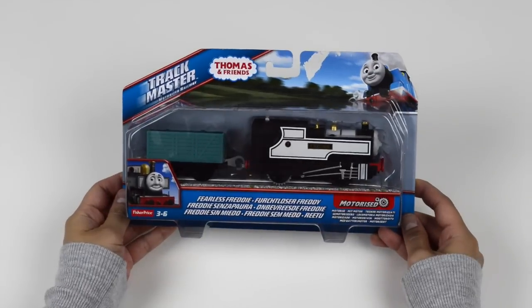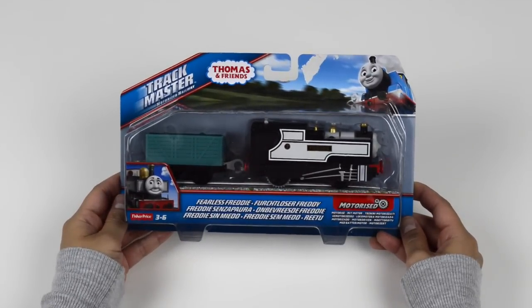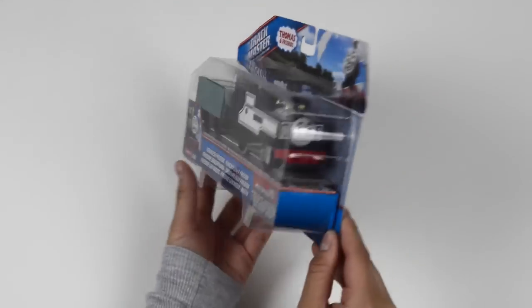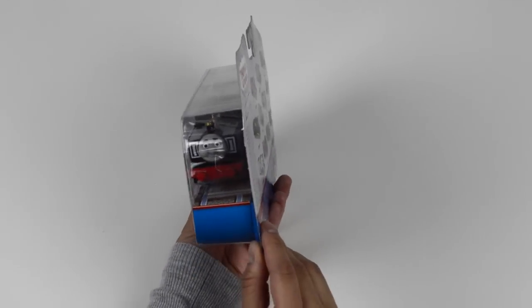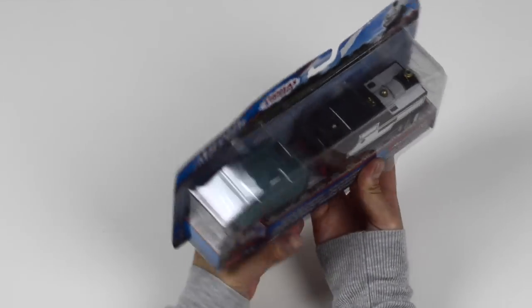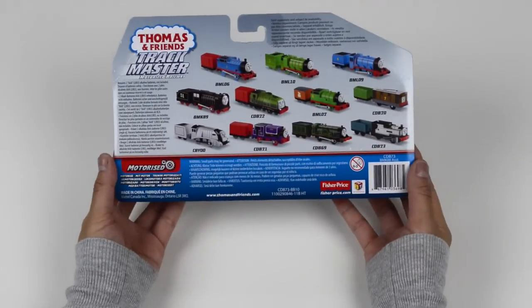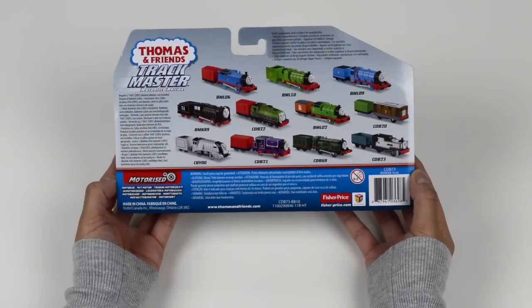Here's the front of the box. The side we see his face. The other side. At the back, we see other trains available for purchase.